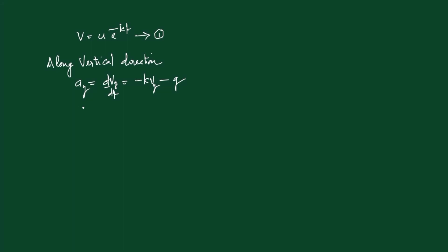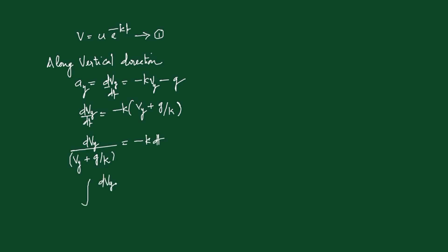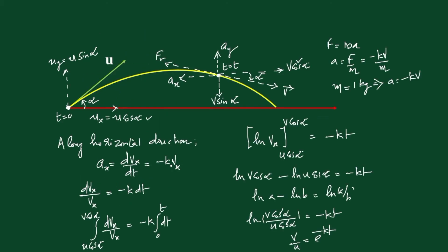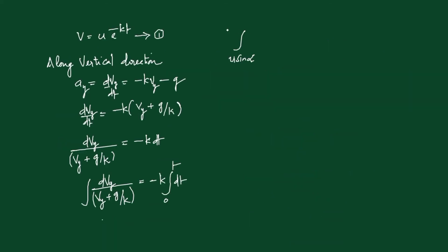Therefore, dvy/dt = -k(vy + g/k). Rearranging: dvy/(vy + g/k) = -k dt. Now integrate: integral of dvy/(vy + g/k) = -k integral of dt. At t = 0, initial velocity along y direction is u sin alpha. After time t, the vertical component is -v sin alpha (negative because it is vertically downward). So integration limits are from u sin alpha to -v sin alpha, and time from 0 to t.